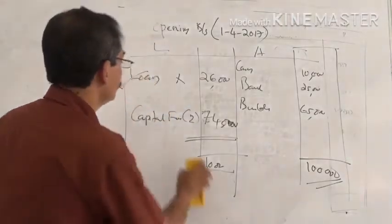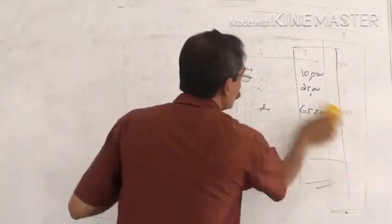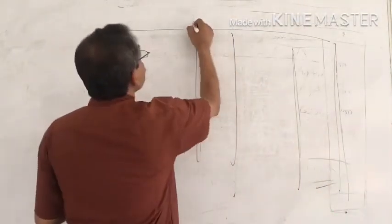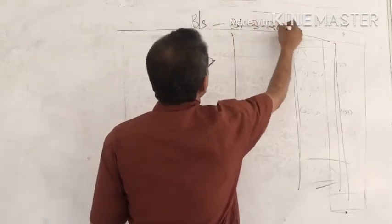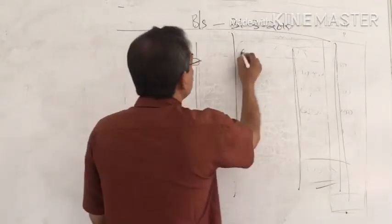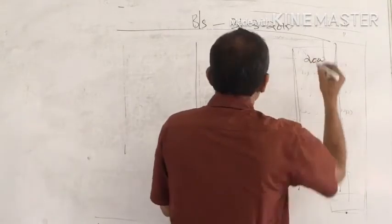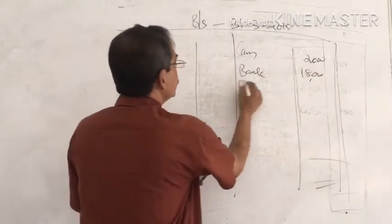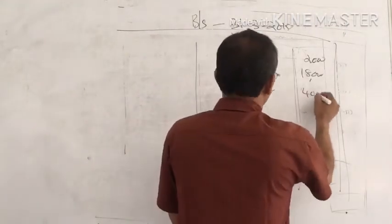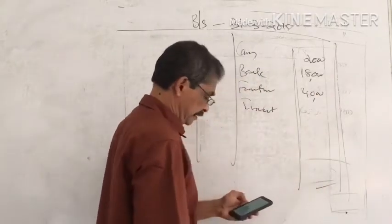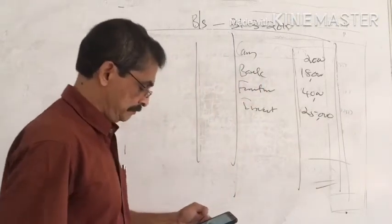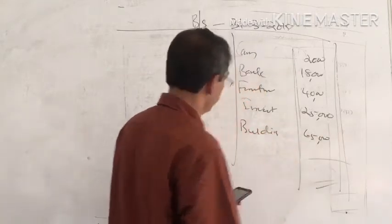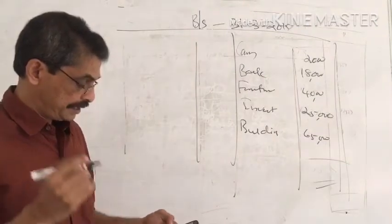Now for the closing balance sheet. The closing balance sheet figures are: cash balance, bank balance — the bank is Rs. 18,000. For furniture, we apply depreciation. Investment is Rs. 25,000. Building remains. Additional items include prepaid insurance and subscription outstanding. Cash is Rs. 2,000 and bank is Rs. 18,000 as closing balances.